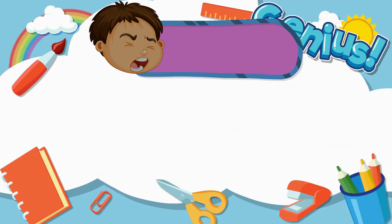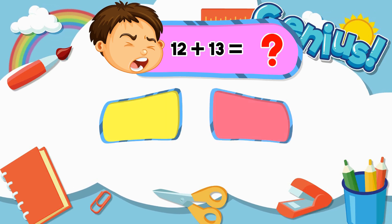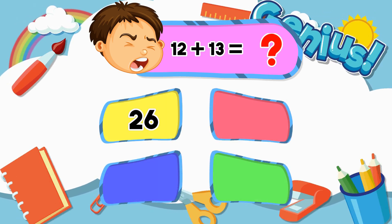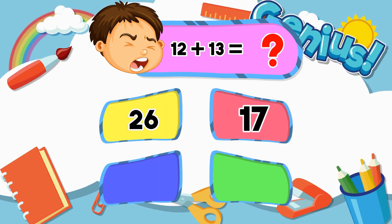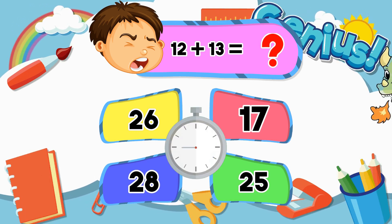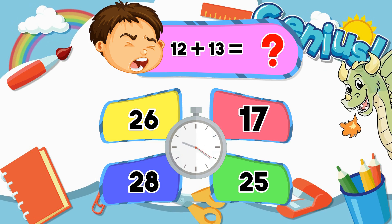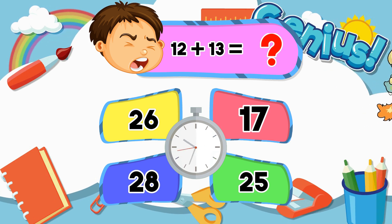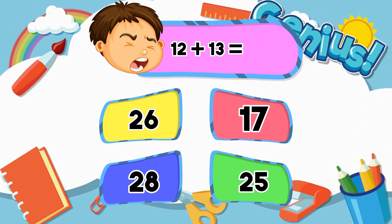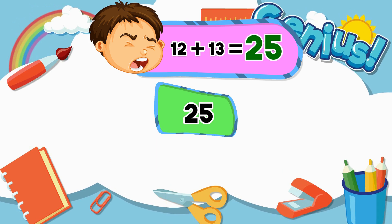What is twelve plus thirteen? Twenty-seven, twenty-eight, twenty-five. Twenty-five.